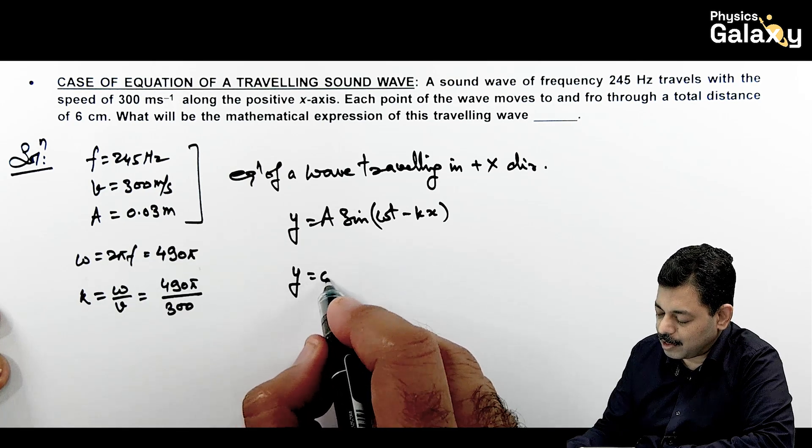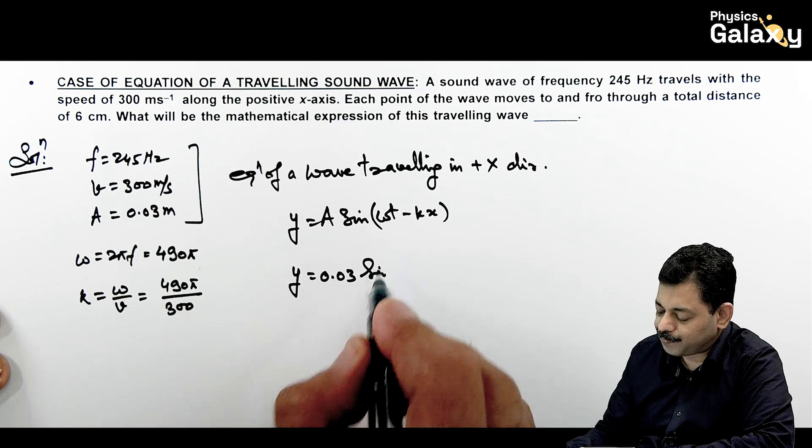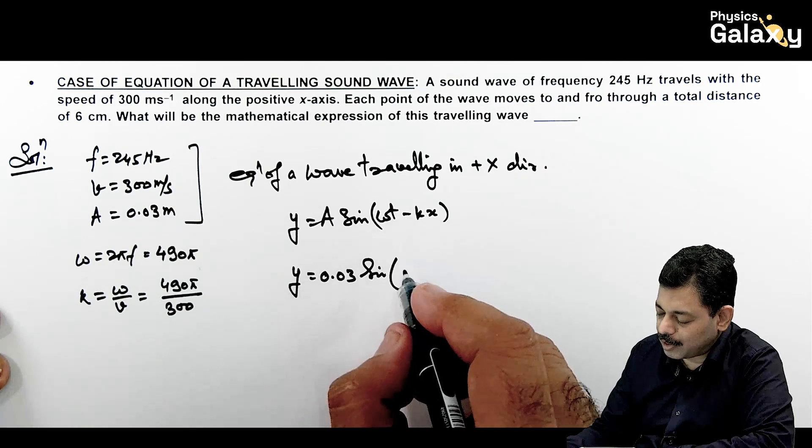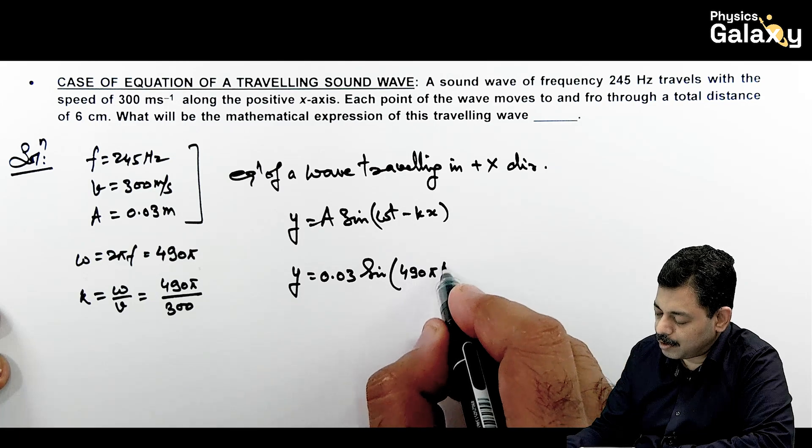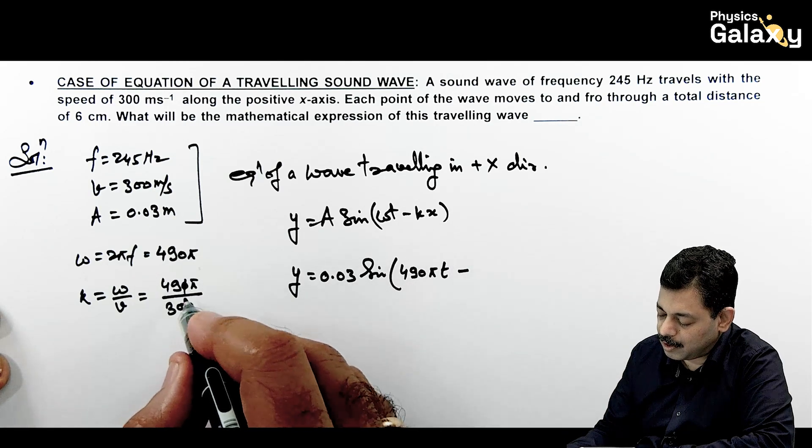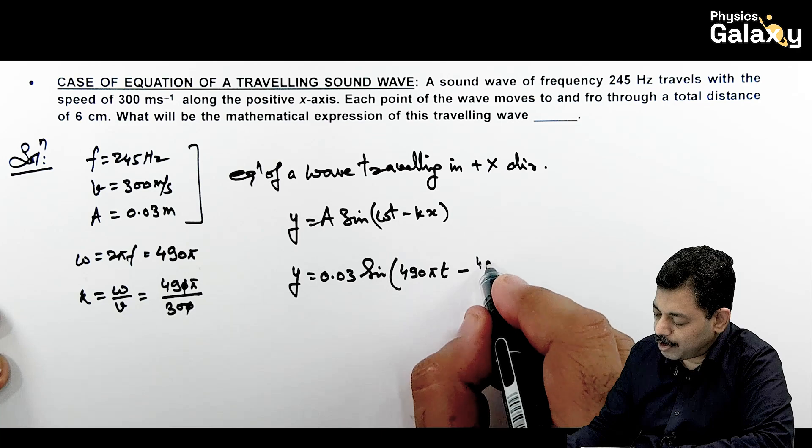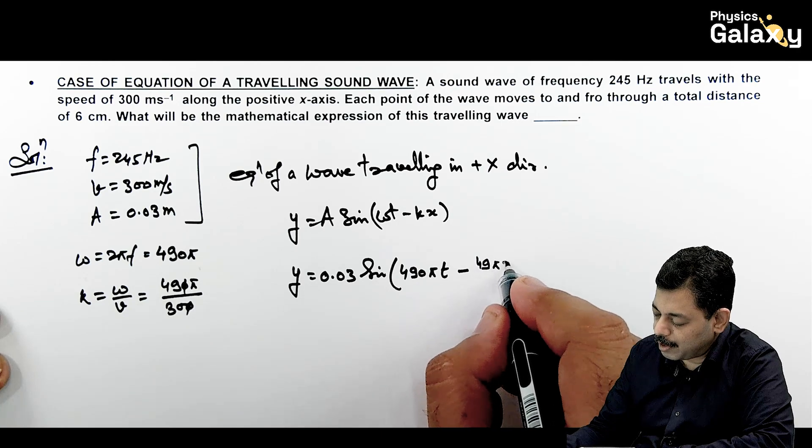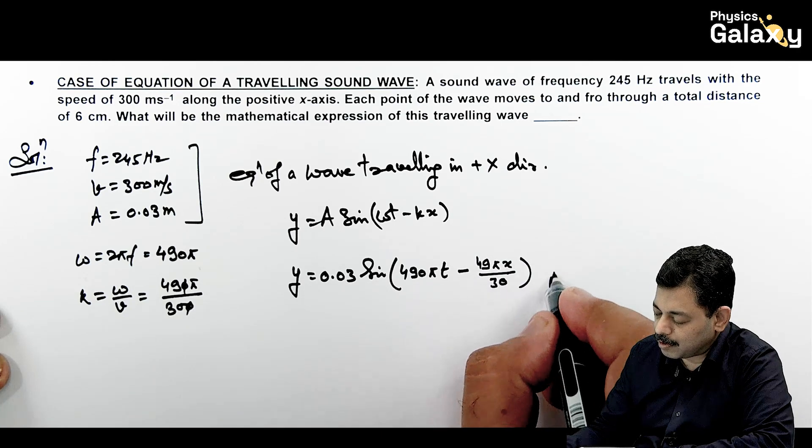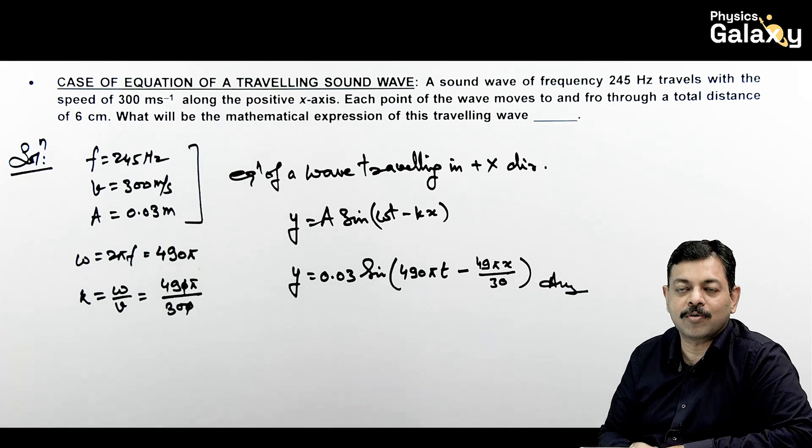Value of y we are getting is: A is 0.03 sine of omega t is 490 pi t minus kx. k here will be 49 pi x divided by 30. That is the result or the wave equation you need to analyze.